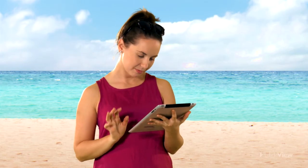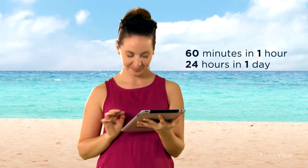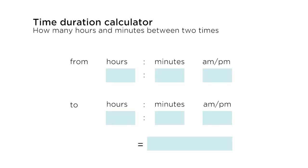Calculating times like this can get a bit tricky because we're not using numbers to the base 10. There are 60 minutes in an hour and 24 hours in a day. So I'm going to use my online time calculator. It's 11.45pm to 2.05am — that's 2 hours and 20 minutes.